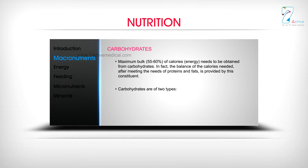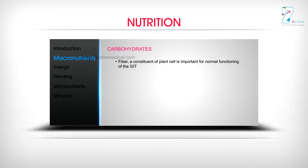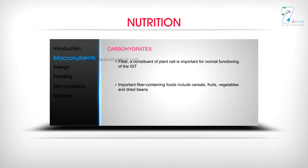Carbohydrates are of two types: simple and complex. Fiber, a constituent of plant cells, is important for normal functioning of the gastrointestinal tract. Important fiber-containing foods include cereals, fruits, vegetables, and dried beans.